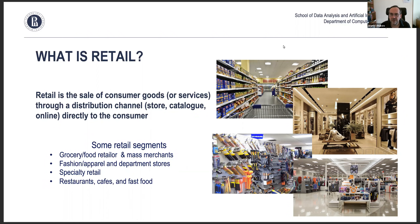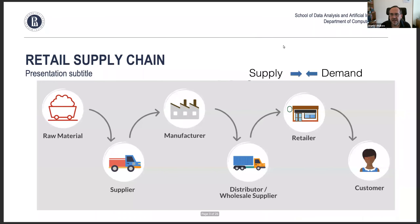As consumers, we're used to the front end of retail — we go to the store, pick up stuff, buy it, and go home. But to understand what's happening inside the system, let's look at the real retail supply chain — how those goods get there. It all starts with raw materials, then manufacturing happens, then the product goes to either a distributor or wholesale supplier, and after that it gets to a retailer, and finally to the customer.